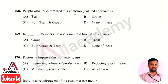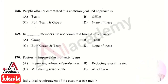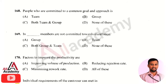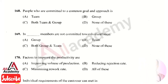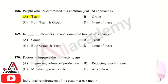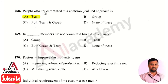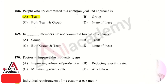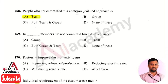The next question is: the people who are committed to a common goal and approach is called? The right answer is option 1, that is a team. In a team, the people are committed to a common goal and approach, so all members of a team work toward the same goal with the same approach.